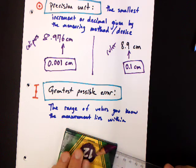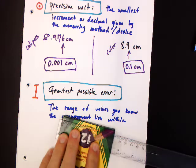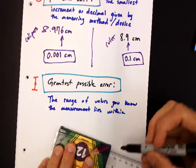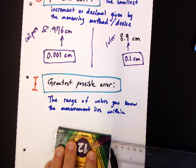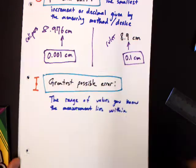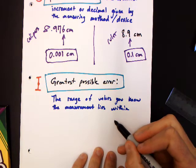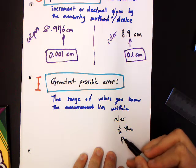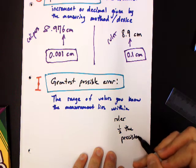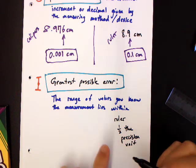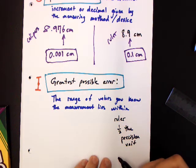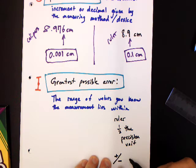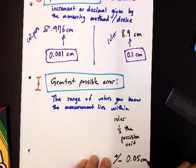When we make this measurement with the ruler, I can tell that the measurement is either right on the 8.9 or kind of between the lines. So for the ruler, this is one-half the precision unit because I can tell if it's halfway in between or right on the line. That makes the ruler have a greatest possible error of plus or minus 0.05 centimeters.